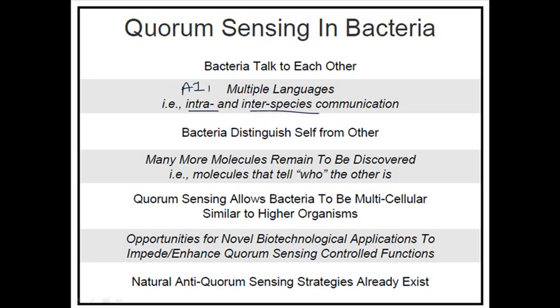The intraspecies communication uses the auto inducer one pathway, where one bacteria communicates with bacteria of the same family. The interspecies communication is carried out by the auto inducer two pathway, where one type of bacteria creates a signal to communicate with bacteria of a different family. Bacteria also distinguish themselves from other bacteria via quorum sensing — that is a very important part.